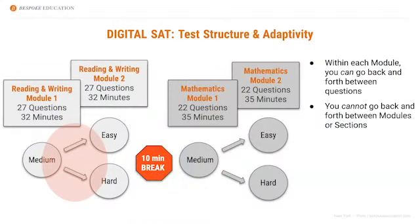Depending on how the student does on that module, the test will then give the student an easy or a hard second module. And this is the nature of the adaptivity — it's not a question-by-question adaptivity where the test changes at every question. It's only this one branching moment that you see in the lower left-hand corner of the screen. Depending on how the student did, you then get served up an easy or a hard module.